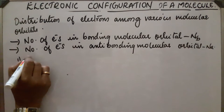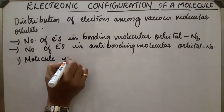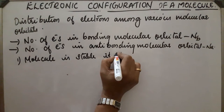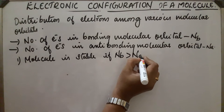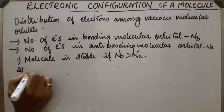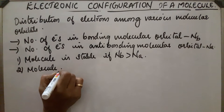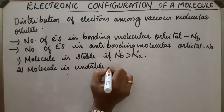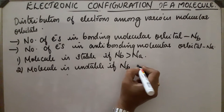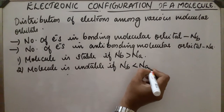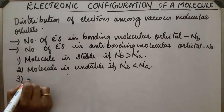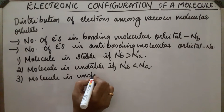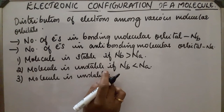First case: the molecule is stable if N.B. is greater than N.A. Then, the molecule is unstable if N.B. is less than N.A. Also, the molecule is unstable if N.B. is equal to N.A.